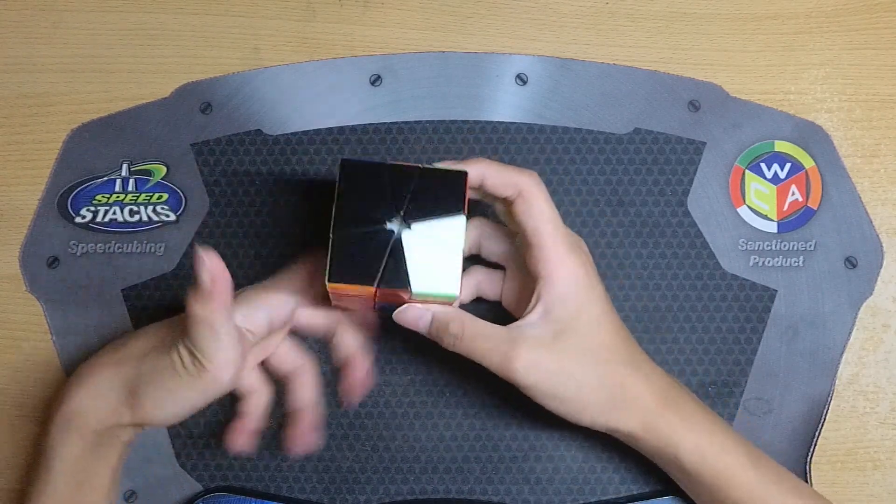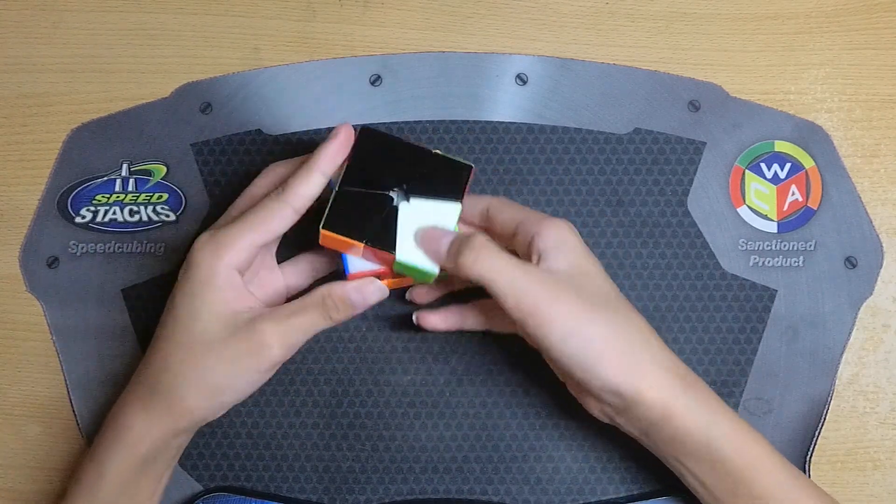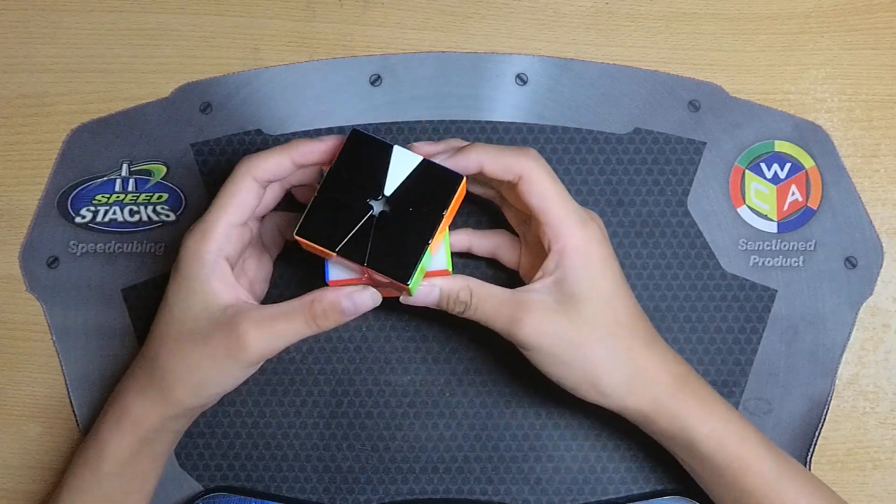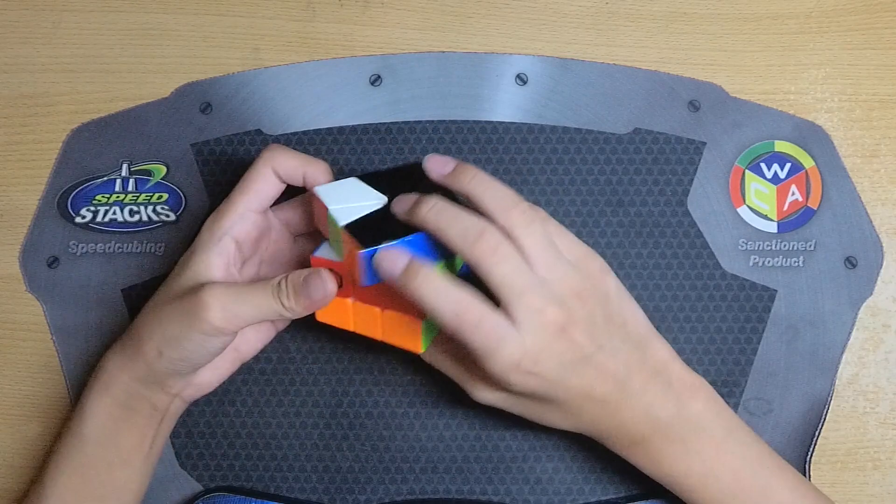Next I was left with a pretty easy 2 slice EO so I just solve it like so, and now I have a 1-1 for EO which I'll just solve with a simple L like this.